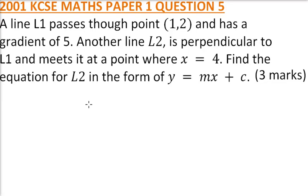So, 2001 paper 1 question 5: A line L1 passes through point (1, 2) and has a gradient of 5.